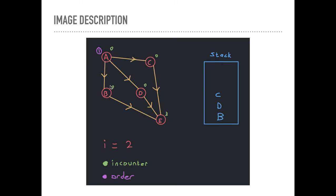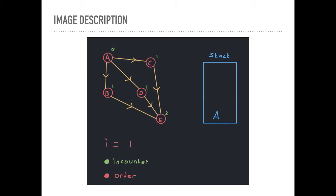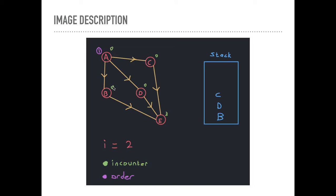W equals G.opposite(U,E). So W is the vertex opposite of A through that edge. And so we're going to say the inCounter of W equals the inCounter of W minus 1. So it was 1, 1, and 1 for B, D, and C.